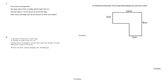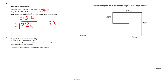Question 7: Tony has a hot dog stall. His sauce bottle holds 224 millilitres; he puts about 7 millilitres on each hot dog. To find how many hot dogs he can sauce from one bottle, calculate 224 divided by 7. 7s into 22 is 3 remainder 1; 7s into 14 is 2. Tony can put sauce on 32 hot dogs from one 224 ml bottle.